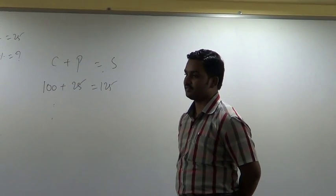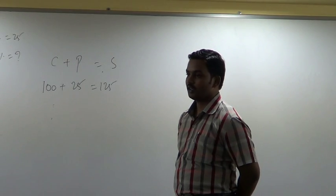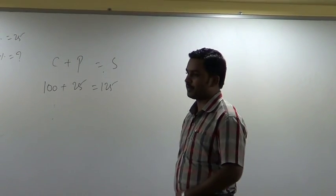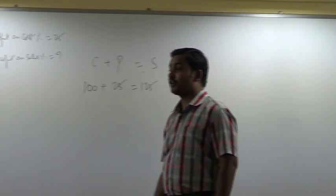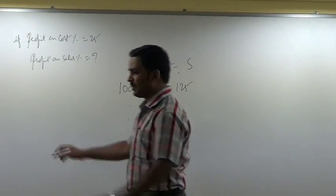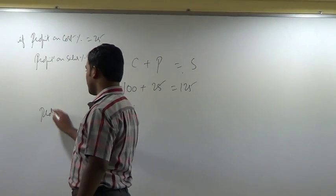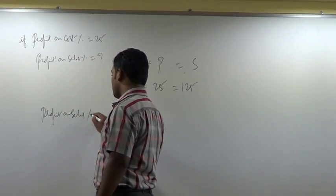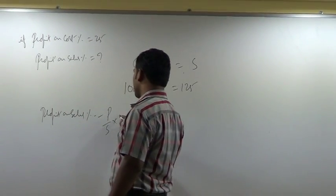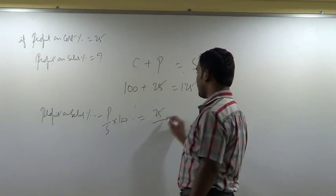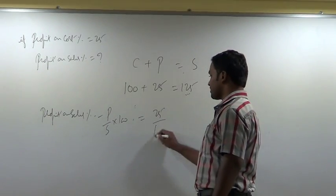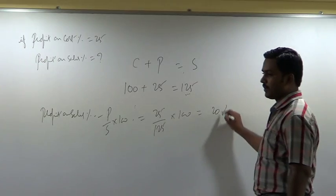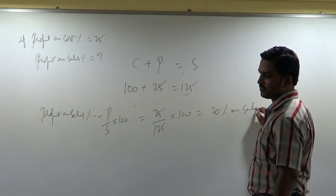That doesn't serve our purpose yet — we want profit on sales percentage. The formula: profit on sales percentage equals P divided by S into 100. P is 25, S is 125, into 100 — it is 20% on sales.